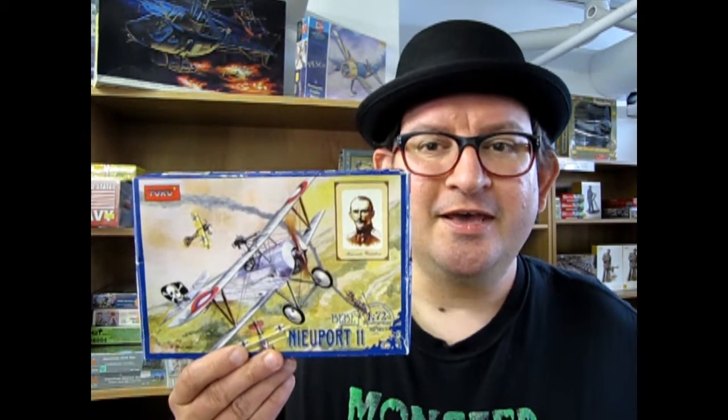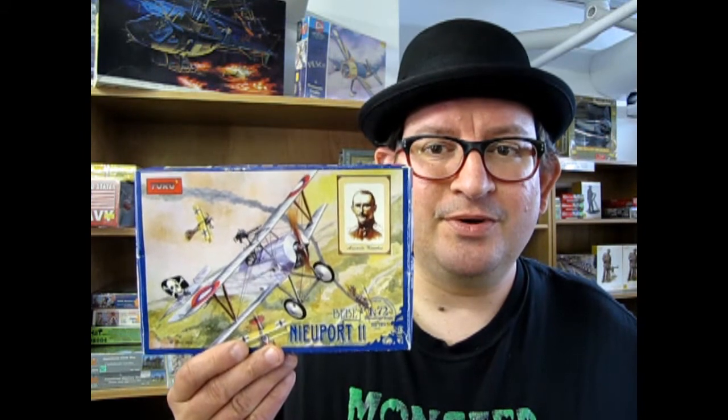Hello everybody, my name is Trevor Rusleskew and welcome to another episode of Monster Hobbies What's in the Box. Tonight we're going to look at this interesting model from Toko.